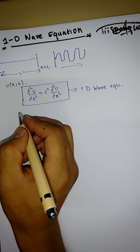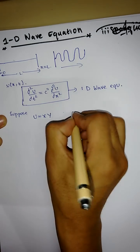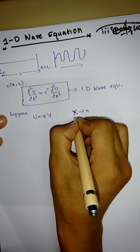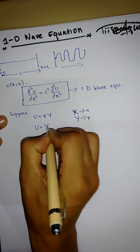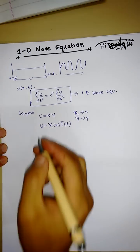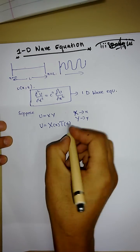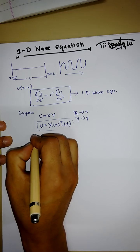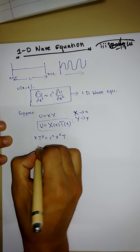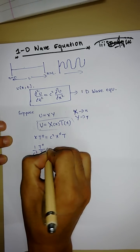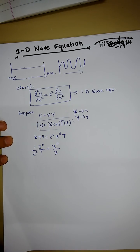The next step is to use the separation of variables method. We suppose u = X(x)·T(t), where X depends only on x and T depends only on t. Substituting into the wave equation and double-differentiating, we get X·T'' = c²·X''·T, and separating variables places T on the left-hand side and X on the right-hand side.